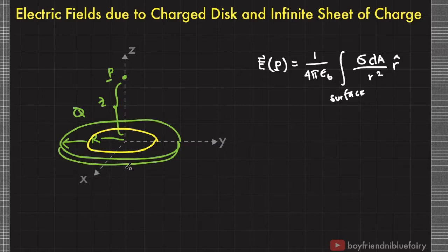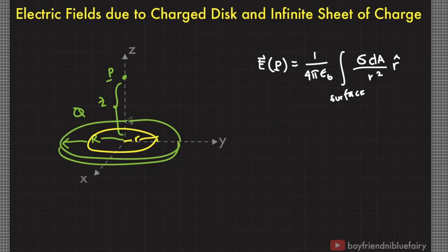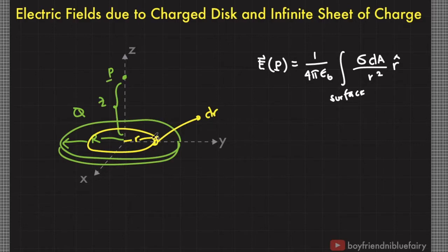Since we already have an expression for the electric field due to a charge ring derived in previous videos, let's focus first on one charge ring at a distance r from the origin — so this ring has a radius of small r. We calculate the contribution of the entire disk at point P by integrating from r equals zero up to r equals capital R, the radius of the disk. The ring has a thickness of dr, and we designate the distance from a portion of the ring to point P as l, since small r is already used for the ring's radius.